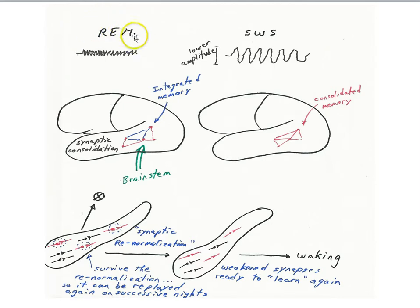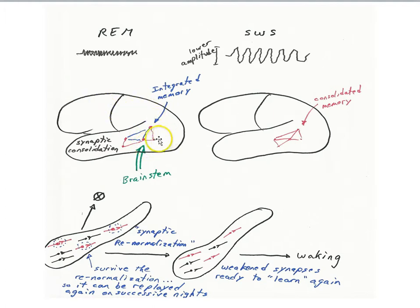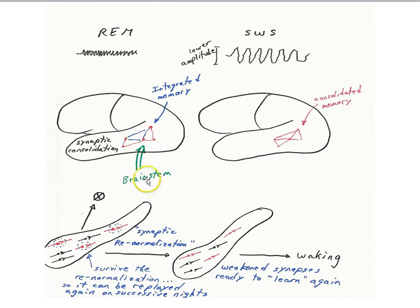Now let's look at the REM stage — rapid eye movement sleep — which is associated with certain kinds of dreams, including the bizarre visual and auditory experiences we have. This is thought to be generated by brainstem neurons sending random signals up to the cortex, which tries to make sense of them, producing the bizarre features of dreams. We'll see how this stage of sleep might also have a memory function. During the REM stage, the hippocampal system is not talking to the cortex — rather, brainstem neurons are sending signals up to the cortex and driving the hippocampus. Tononi and others argue that during this stage, the brainstem activity helps the cortical memory system integrate new information with previously learned information — what we call synaptic consolidation, LTP up in the cortex.